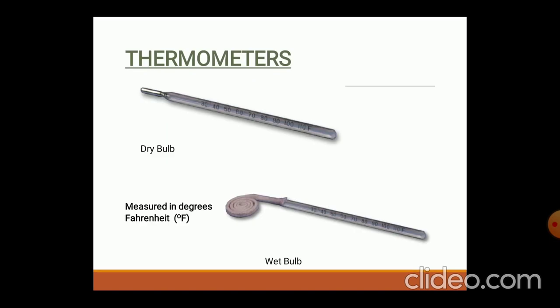These are the types of thermometers shown on your screen. The upper thermometer measures dry bulb temperature in both Fahrenheit and Celsius. The lower thermometer is covered with a cloth wrapped around the bulb — this kind of thermometer, with the bulb covered by a wetted cloth, is used for measurement of wet bulb temperature.